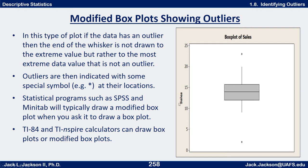Q1 is down here, the minimum is way down here, and the maximum is up here. If we were to do a regular box plot, this whisker would go all the way up to the maximum point and this lower whisker would go all the way down to the minimum point.